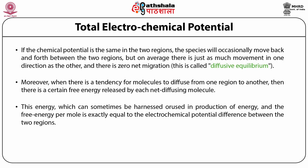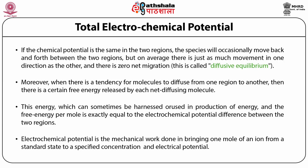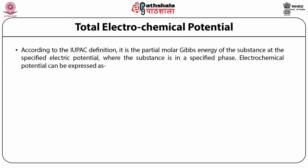The electrochemical gradient — differences in chemical potential across the membrane — will produce delta G. Electrochemical potential is the mechanical work done in bringing one mole of an ion from a standard state to a specified concentration or electrical potential. According to the IUPAC definition, it is the partial molar Gibbs energy of a substance at a specified electric potential where the substance is in a specified phase.